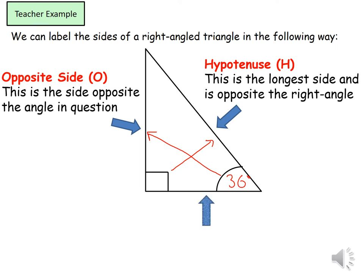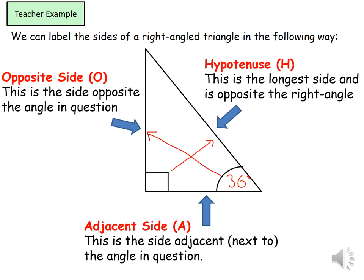And the last one is our adjacent side. This is the side adjacent next to the angle in the question. To make life much easier start off by doing the hypotenuse and the opposite side first and then the process of elimination will be left over with the adjacent.